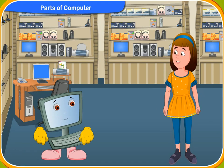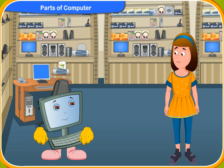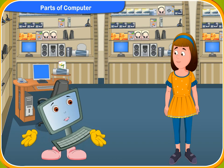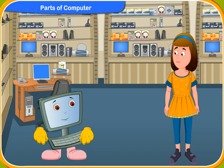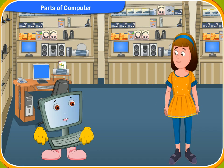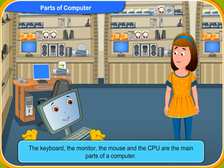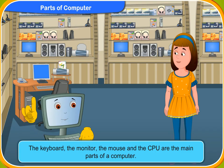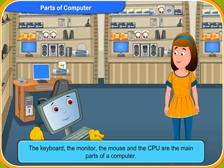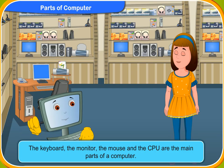Clicko, look at all these electronic equipments. I wonder what they are used for. Rennie, all these are different parts of a computer. What? I thought only the keyboard, the mouse, the CPU and the monitor are parts of a computer. Actually, the keyboard, the monitor, the mouse and the CPU are the main parts of a computer. These equipments you see on the shelves are some other parts of a computer.